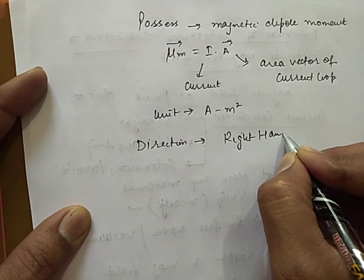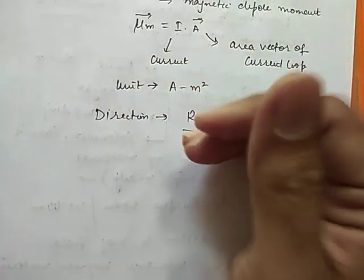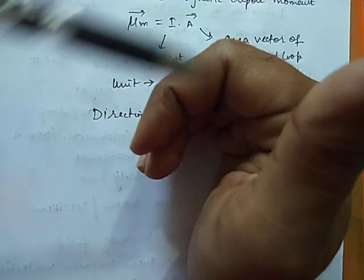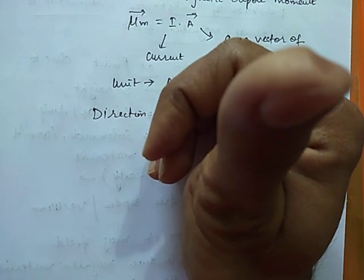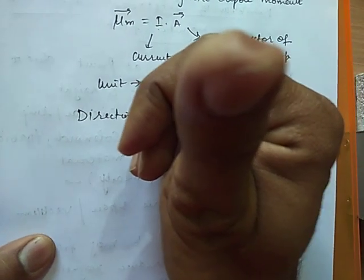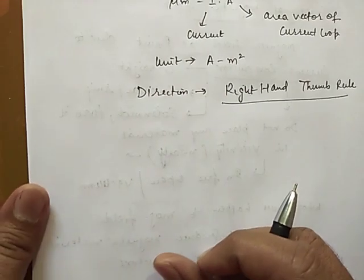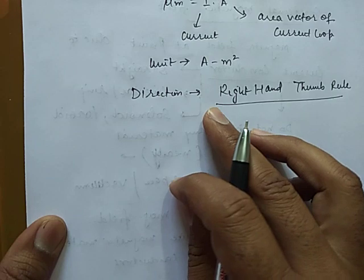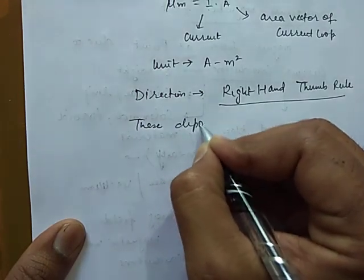Now what is this right hand thumb rule? It states that if we curl the finger in this way and assume that the current is flowing in the direction of curl finger, the direction of thumb will give the direction of magnetic moment. Similarly, if we reverse the direction, the thumb will now point in downward direction. So in this case the direction of magnetic moment will be downwards. This is how we can find the direction of this magnetic moment.